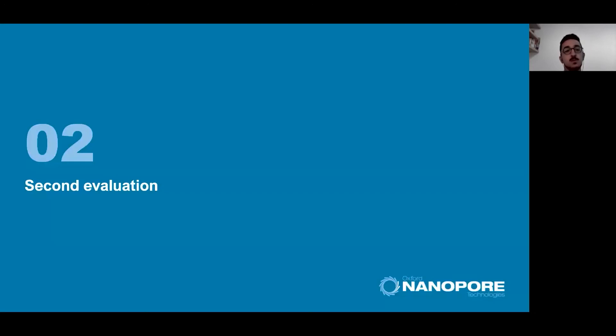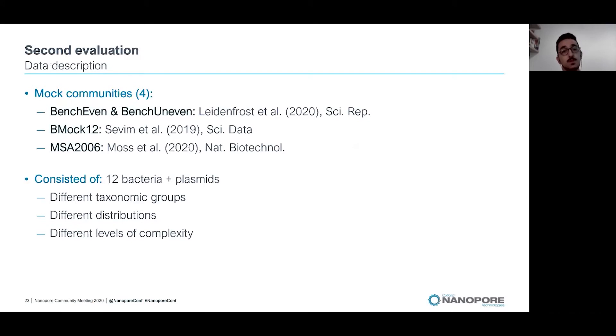Then we performed a second evaluation. This time we used another four mock communities. Again, these mock communities were sequenced by other labs and the data was available in the original papers. In the four cases, the mock communities consisted of 12 different bacteria and plasmids, and they comprise different taxonomic groups, different distributions and different levels of complexity.